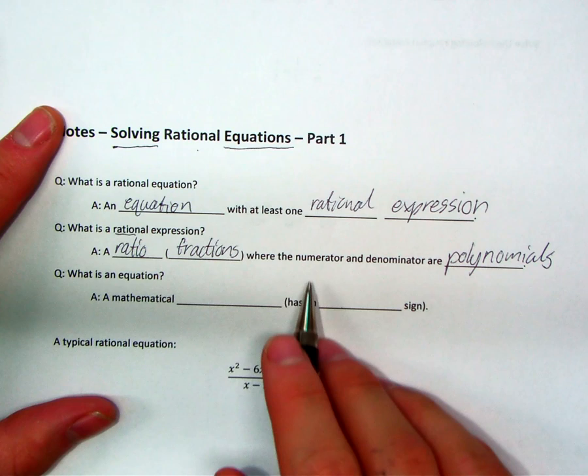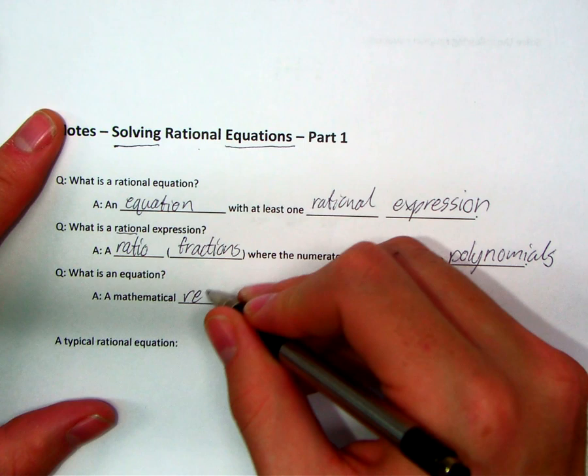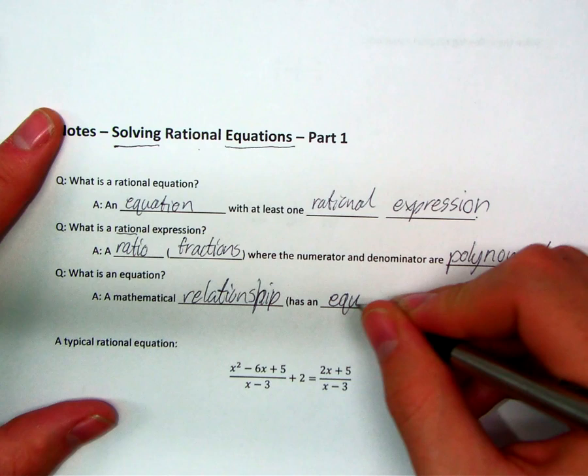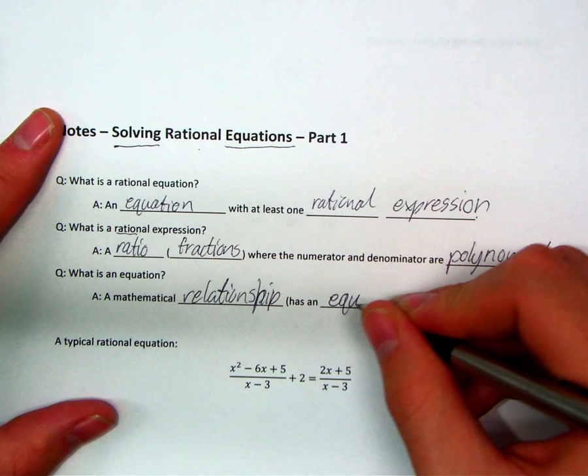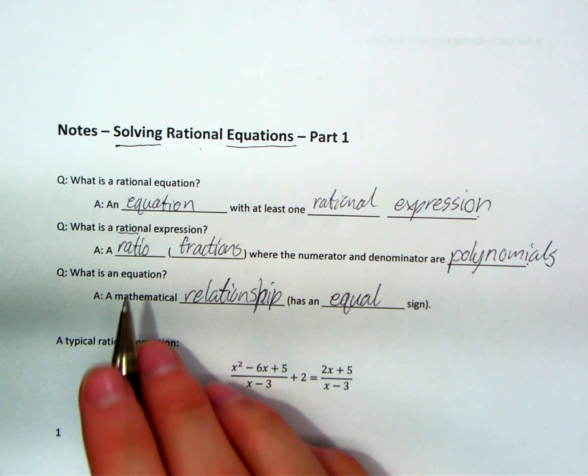They're both polynomials, the numerator and denominator. And then what is an equation? An equation is a mathematical relationship. You need equal signs. Equal signs tell you how one side of an equation is related to the other side. It says that they're equal to each other. So if you see an equal sign, you have an equation. And if that equation has rational expressions in it, you have a rational equation.